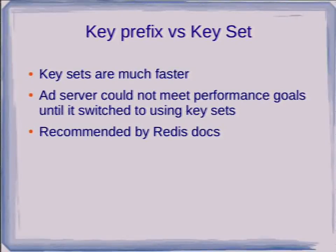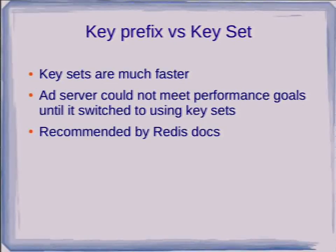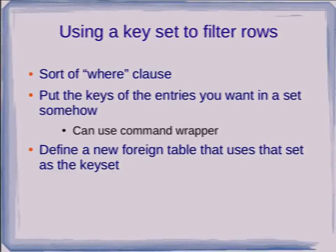Don't ever use the key prefix in production. The ad server we're going to talk about actually tried that as their first approach and came back to me a couple of weeks later saying it wasn't performing very well. I said, what happens if you try with a key set? And suddenly, magically, it just worked really fast. All they had to do was, as they were setting values, also do SADD on the key — and when they fetched it, it was very fast. This is the pattern actually recommended by the Redis docs: don't use KEYS, use sets of keys.